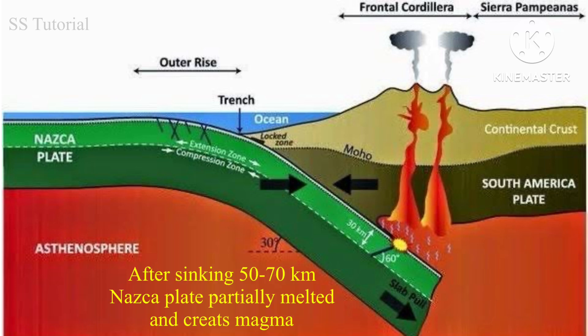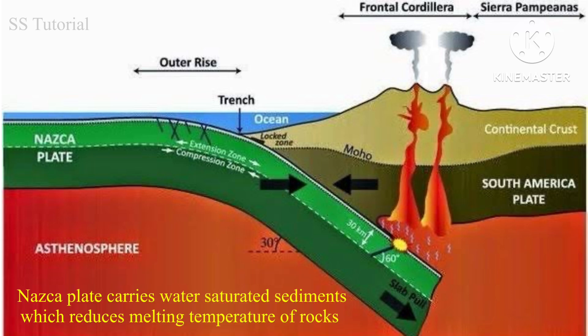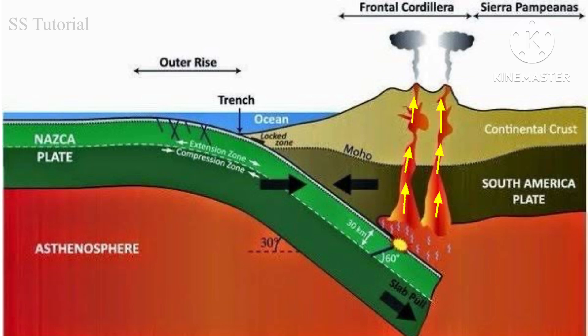After sinking 50 to 70 kilometers, part of the Nazca plate partially melts due to higher temperatures inside the Earth, generated by the plate collision. As the Nazca plate is an oceanic plate, it carries water-saturated sediments, which reduce the melting temperature of the rocks and create magma. This magma comes out through the thinner plate and forms volcanoes in the Andes mountain.